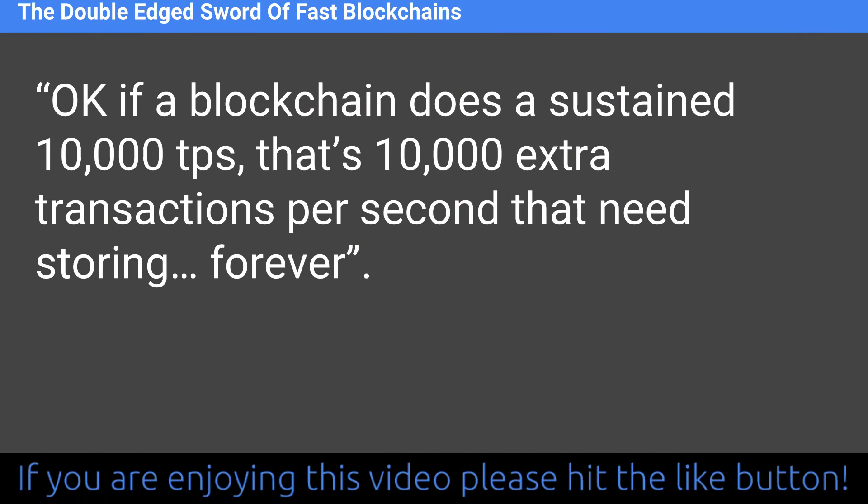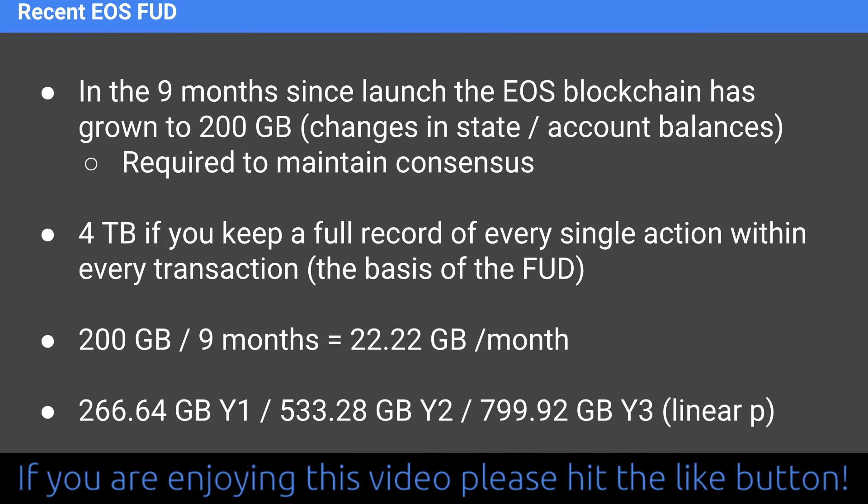This is true if we want an open, public, transparent, immutable blockchain — which both Bitcoin and EOS are. Moving on to the recent EOS discussion triggered by that article: in the nine months since the EOS blockchain launched, it has grown to 200 gigabytes — representing all records of changes in states and account balances required to maintain consensus. The four-terabyte figure applies if you keep a full record of every single action within every transaction.